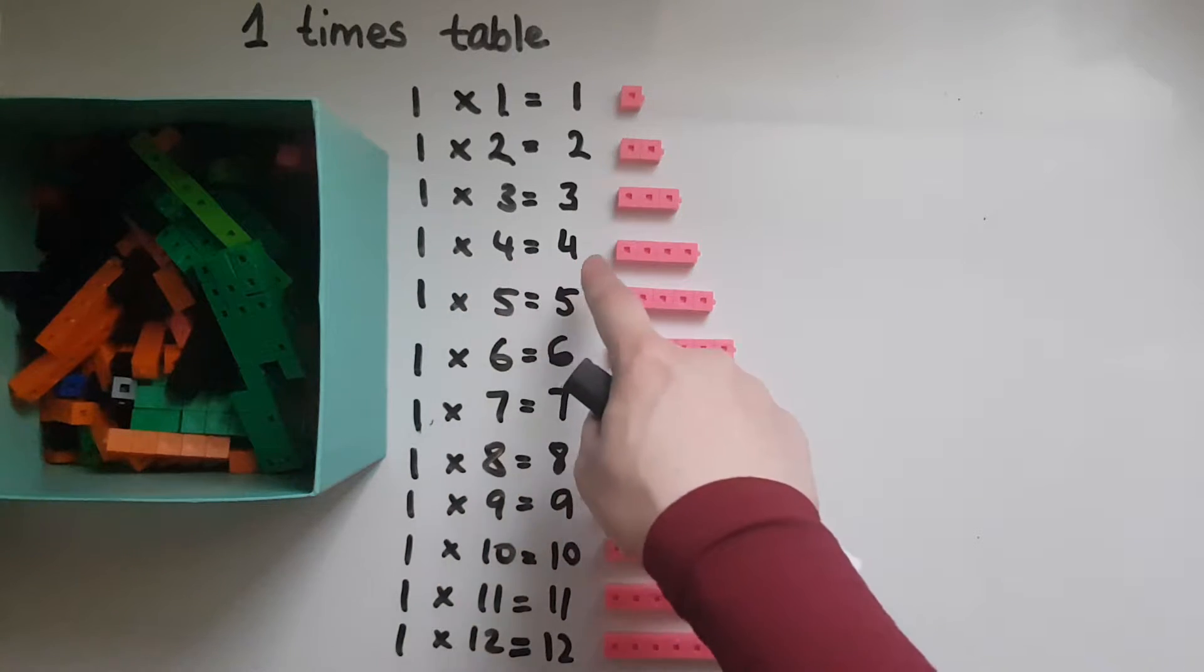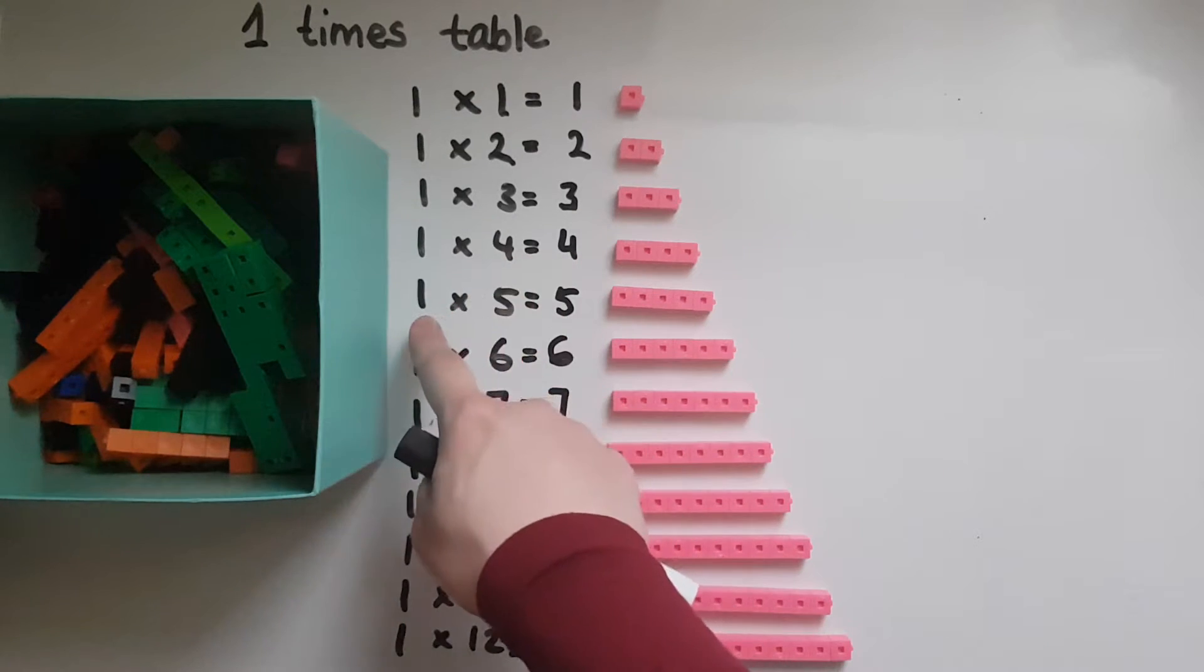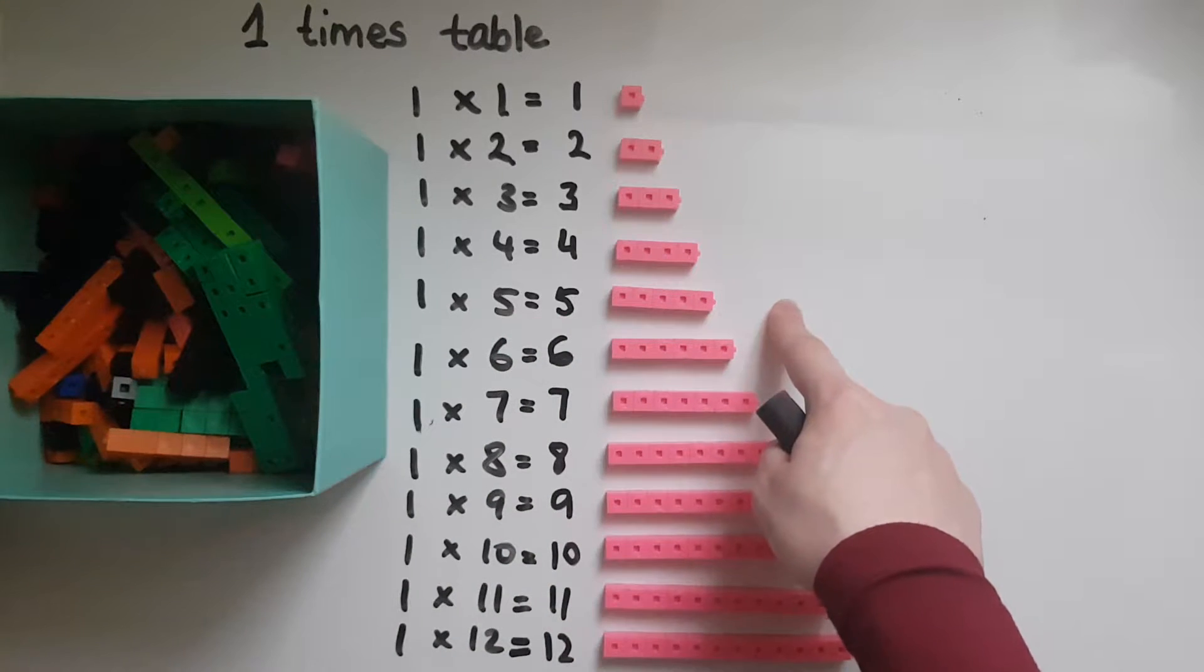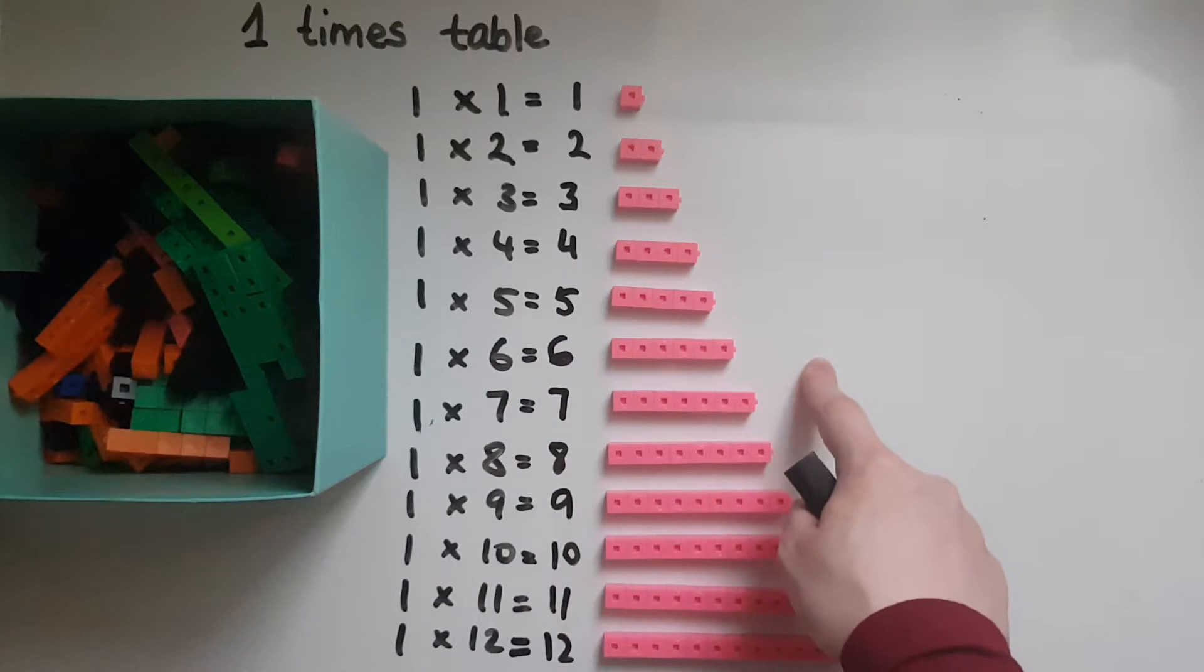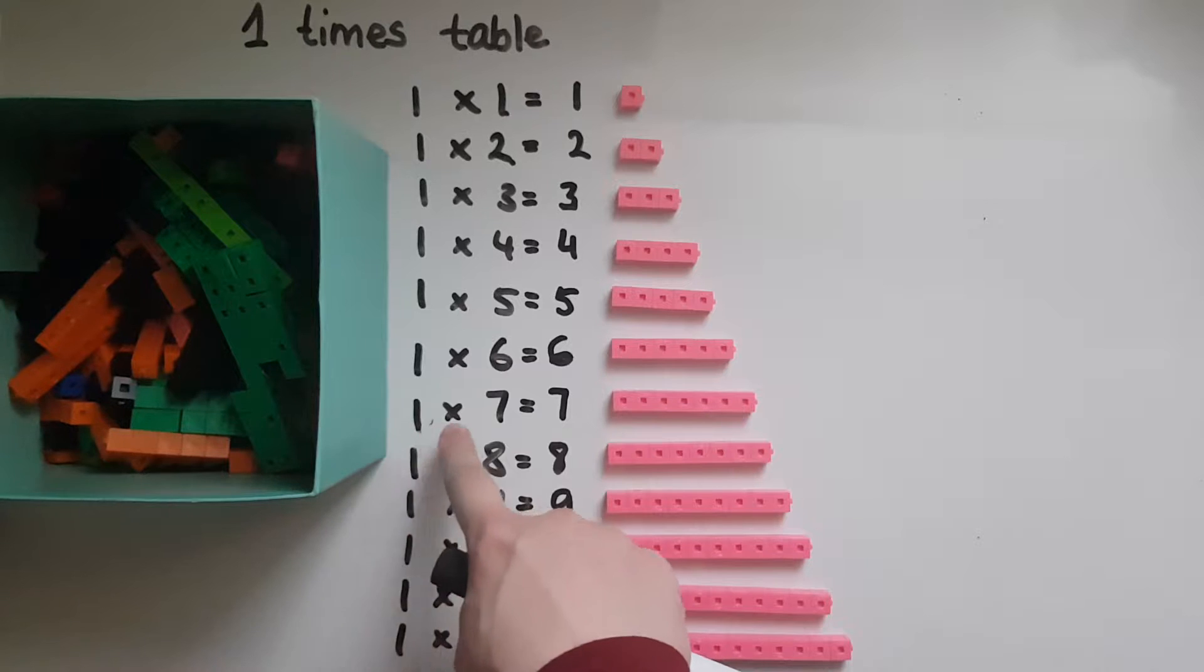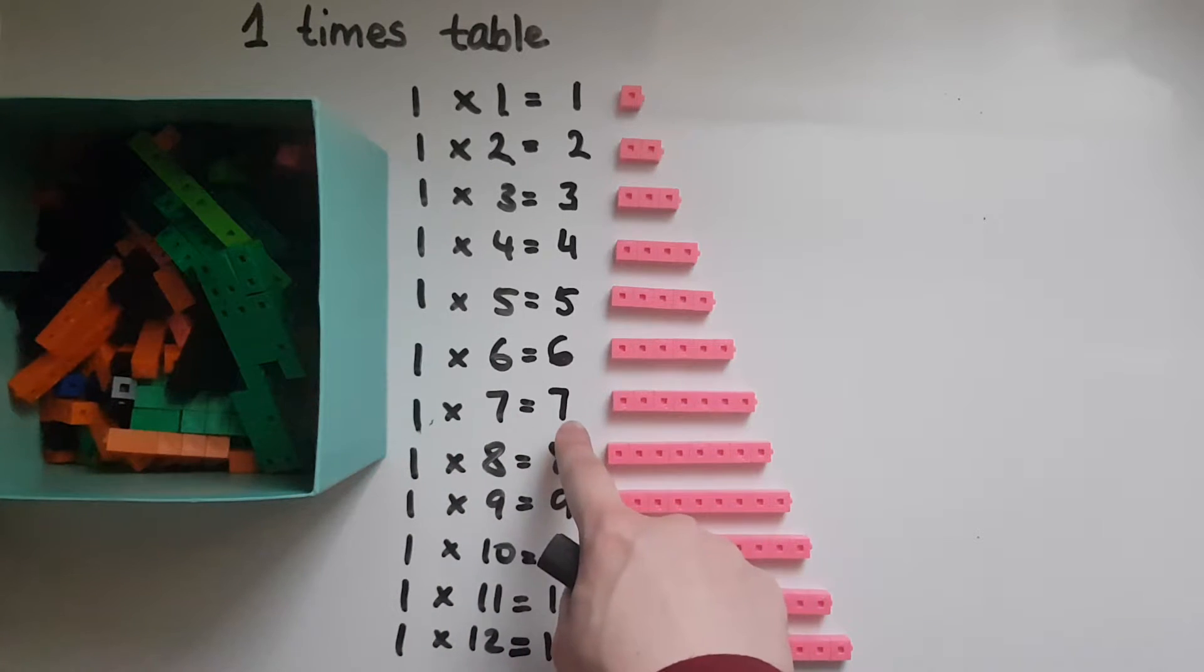One times four gives us four, one times five gives us five, one times six gives us six. So if I go one time to the shop and get seven items, I'll bring home seven items.